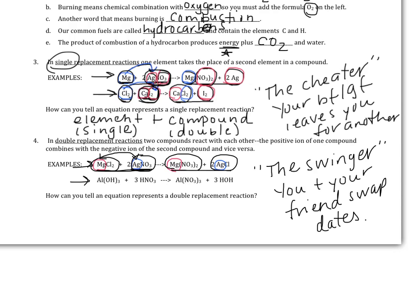In the second example, a similar scenario: you start off with aluminum and hydroxide together, and hydrogen and nitrate together. Somewhere along the way, the aluminum and the hydrogen swap places, and now you've got aluminum and nitrate together, and hydrogen and hydroxide (OH) together.